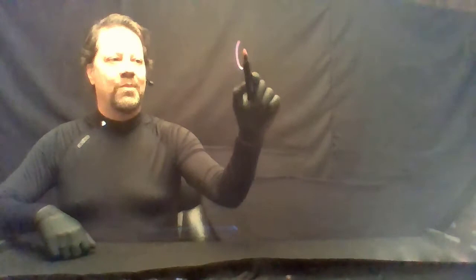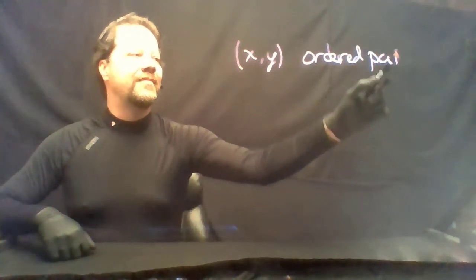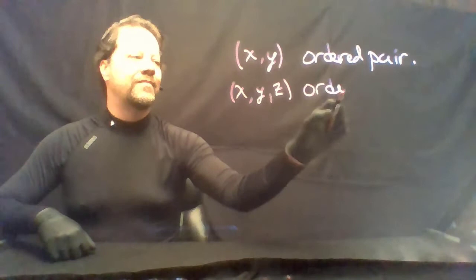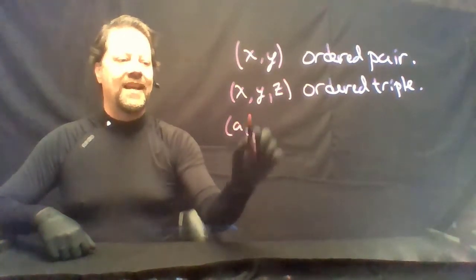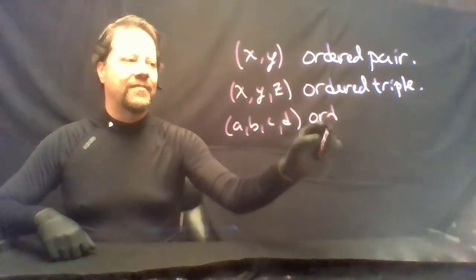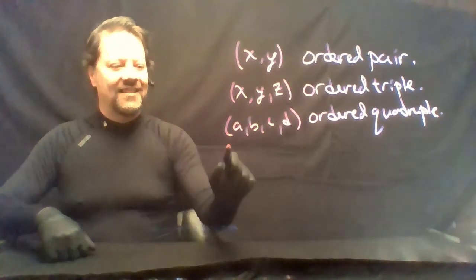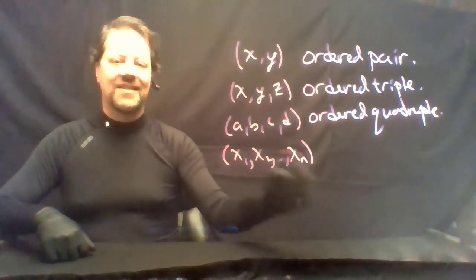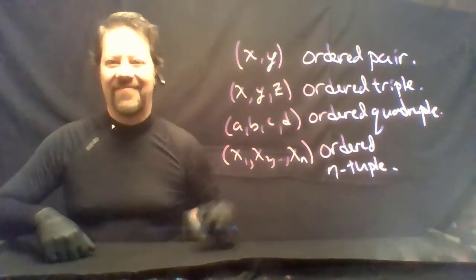When we write something as (x, y), we call this an ordered pair. If we have (x, y, z), that's an ordered triple. If we have four coordinates, say a, b, c, d, this is an ordered quadruple. If we have one through n entries in a list like this, this is called an ordered n-tuple.